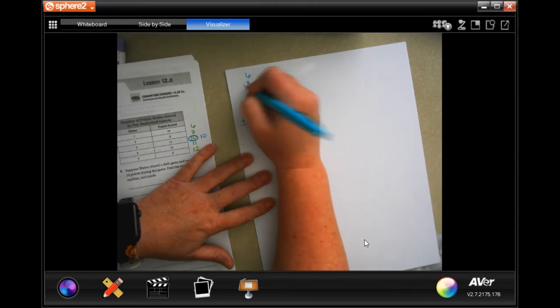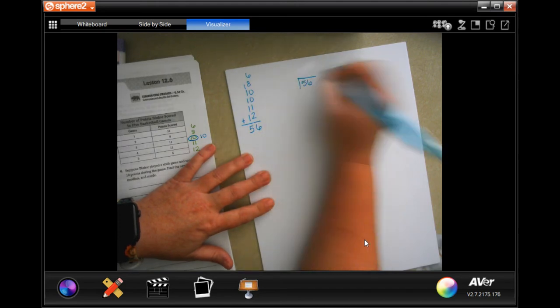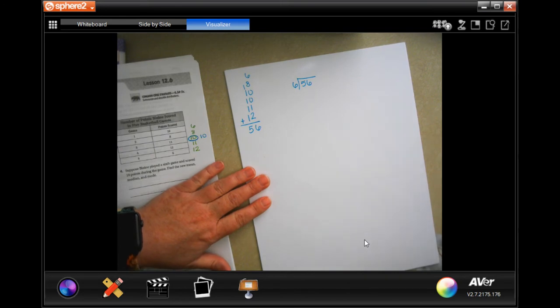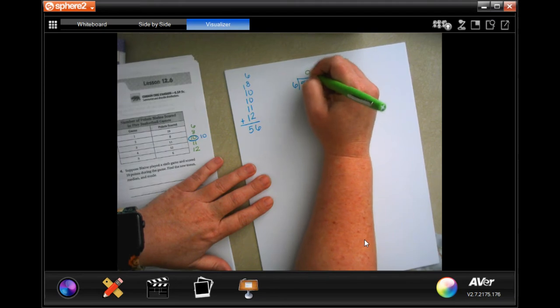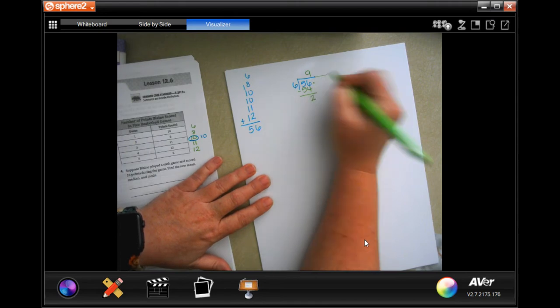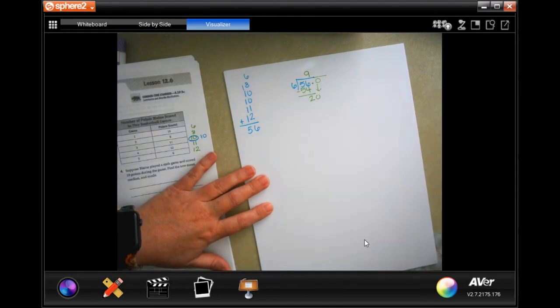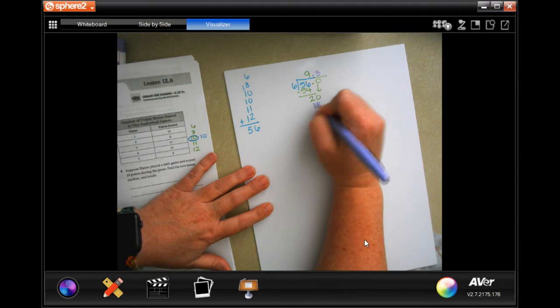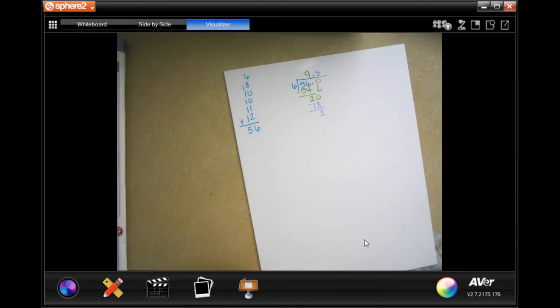So 6 and 8 is 14, plus 1 is 15, plus 2 is 16, carry the 1. 1, 2, 3, 4, 5, so 56 divided by 1, 2, 3, 4, 5, 6 numbers. So 6 times 9 is 54. I think that's going to be as close as we can get. We're going to add a 0, bring it down. 6 goes into 20. Oh, I didn't bring my decimal up. 3 times. 3 times 6 is 18. We would have 2 left over again.